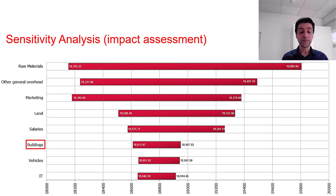When we alter the raw material cost within its range, the output, which is the total cost, will vary between $18,155 to $19,805. So we can see it's a quite large range when compared to other input variables such as buildings, which has a very low impact on the output.